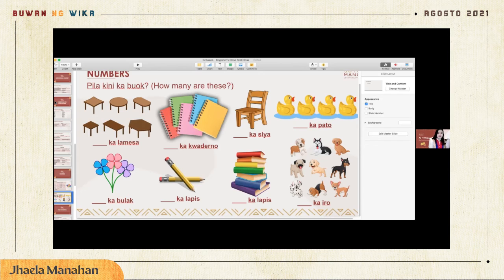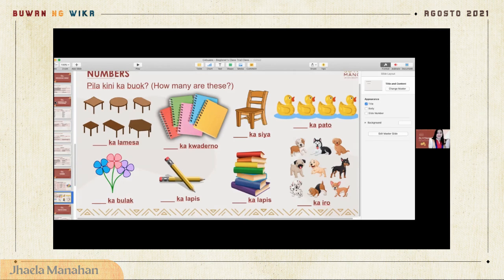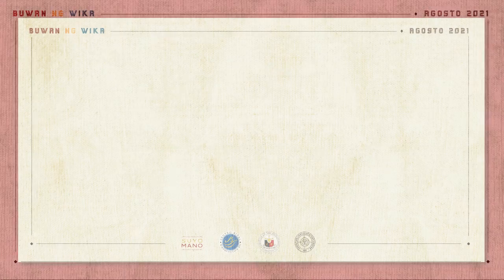Now let's practice with a counting exercise. 'Pila ka buok ang lamesa?' — How many tables are there? Jones, maybe you can try first. Two, four, six — 'Unum ka lamesa,' right? Thank you so much, Jones — unum ka lamesa. Next: 'Pila ka buok ang quaderno?' — Notebook is called quaderno in Cebuano. Five — 'Lima ka quaderno.' Yes, that's right, Miss Seni!